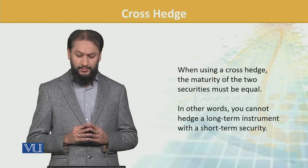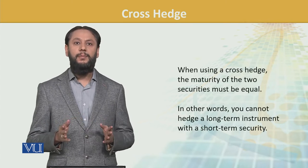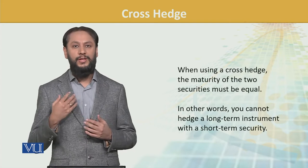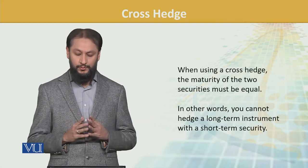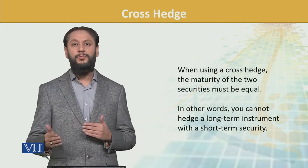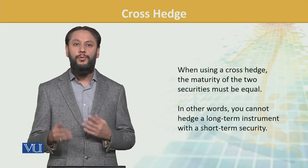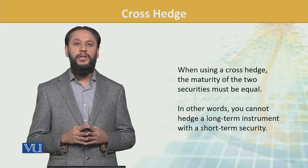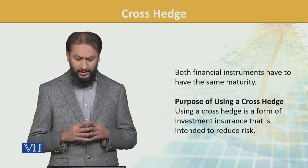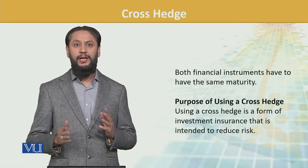When using cross hedge, the maturity of the two securities must be equal. The period must be the same, otherwise it will not serve the purpose. The timeline should be similar — you cannot hedge a long-term instrument with a short-term one. If you have a position for three months but the instrument is for two years, it is not logical and will not fulfill the main purpose. Both financial instruments must have the same maturity.